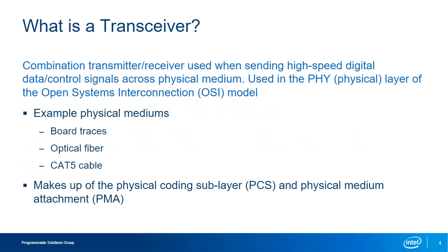A transceiver is a combination transmitter and receiver used by applications to provide high-speed communication. This could mean hundreds of megabits per second to hundreds of gigabits per second depending on the requirement. A transceiver allows communication to use a wide variety of different physical mediums depending on the application — simply across a board or backplane, or across optical fiber or cable. Thus they are used in the physical layer of the Open Systems Interconnection or OSI model, which describes the functionality found in interconnect protocols in most communications, networking, and computing systems.